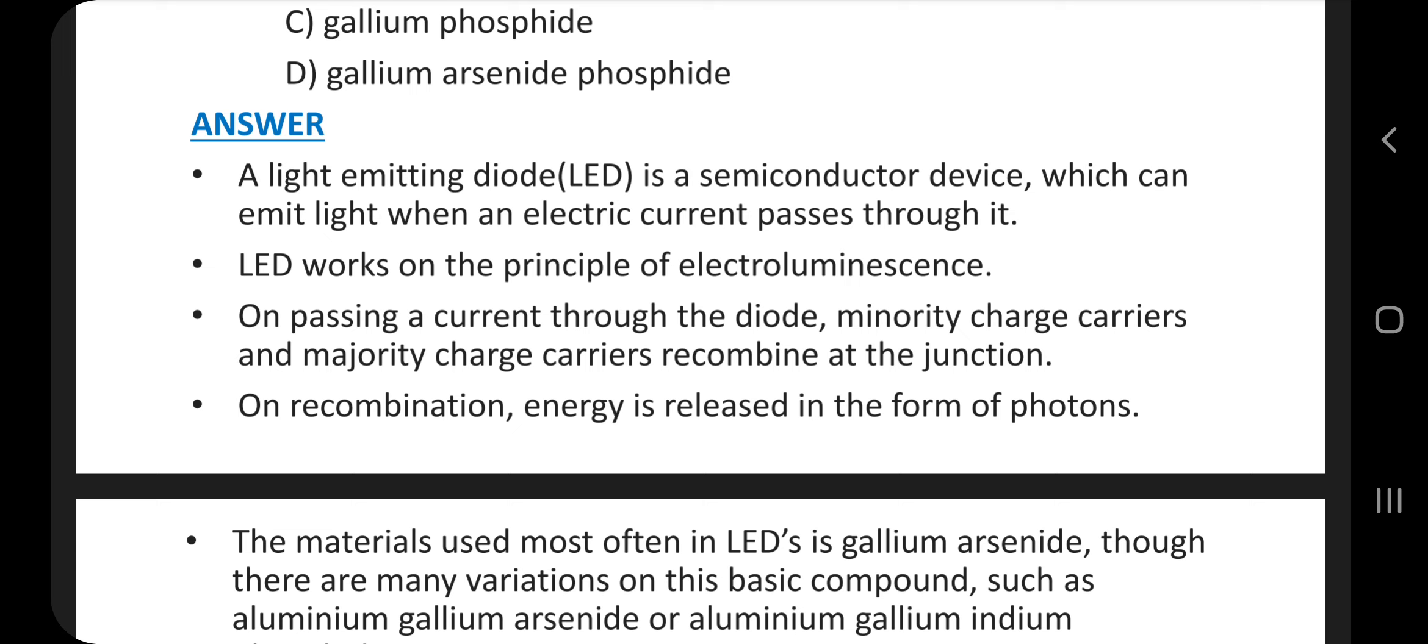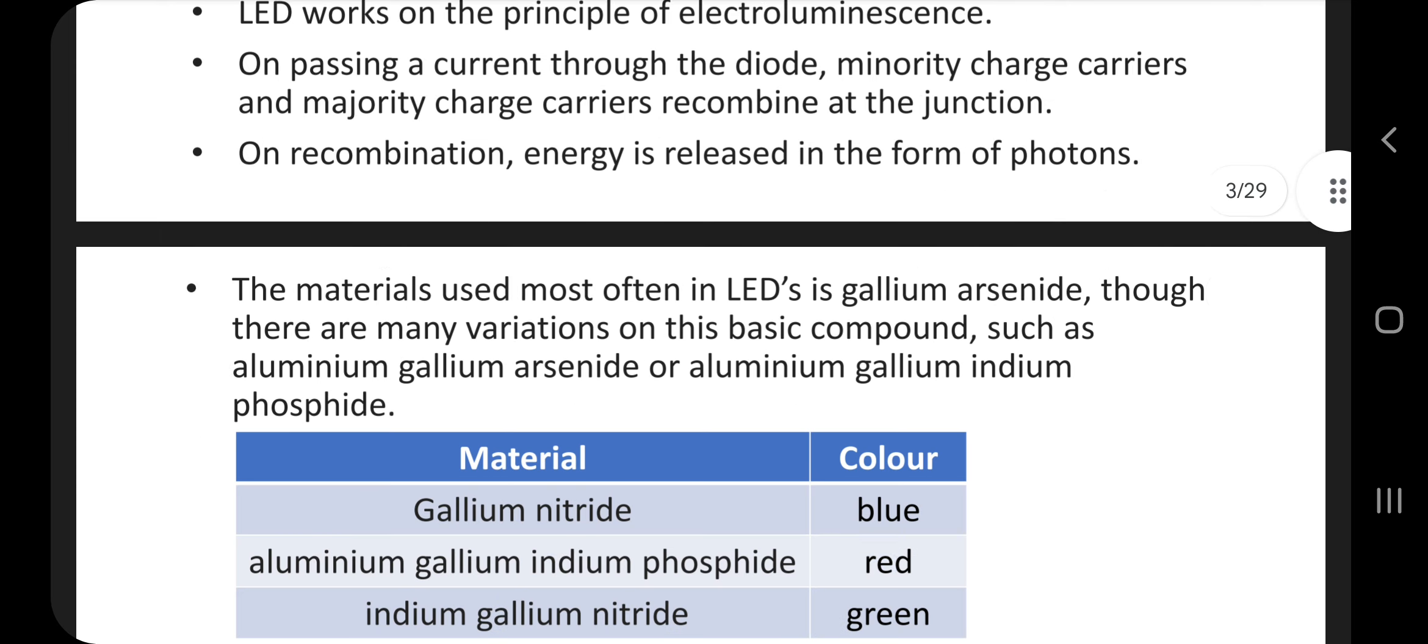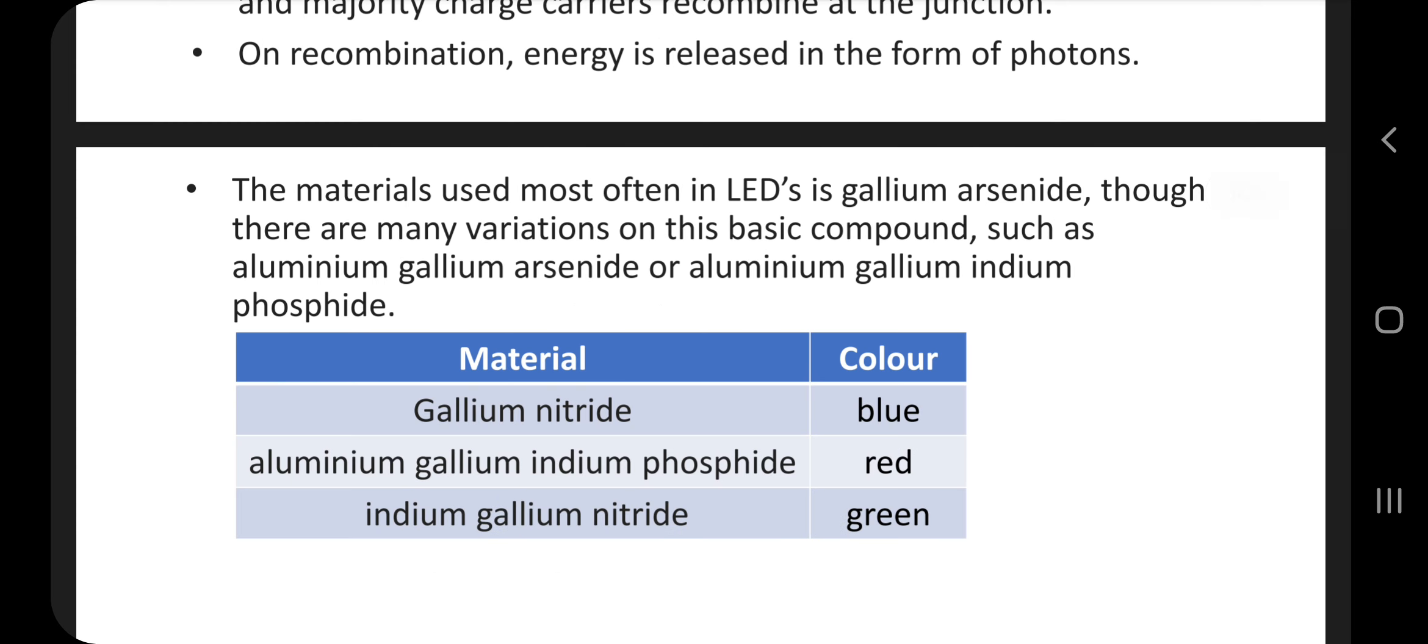On passing a current through the diode, minority charge carriers and majority charge carriers recombine at the junction. On recombination, energy is released in the form of photons. The materials used most often in LED is gallium arsenide, though there are many variations on this basic compound such as aluminum gallium arsenide or aluminum gallium indium phosphide.